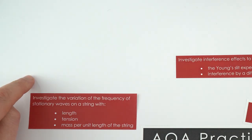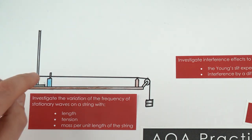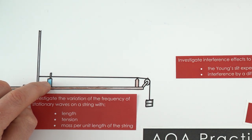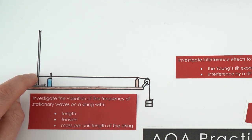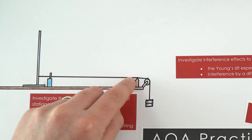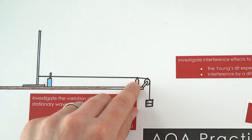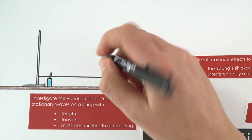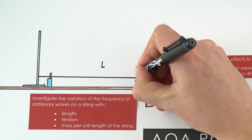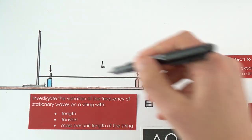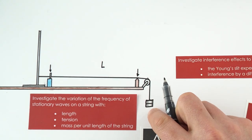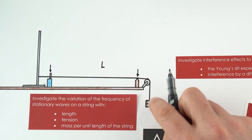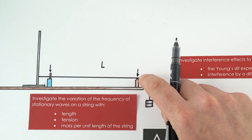Let's start by looking at the apparatus for the first experiment. We have a vibration generator connected to a signal generator, so we can control the frequency of how much the top oscillates up and down. A string is threaded through this, tied to a retort stand at one end and going over a bridge - similar to what you might find in a violin. This gives a definite length between the bridge and the vibration generator. The string then goes over a pulley off the edge of the bench, with masses hanging to create tension.